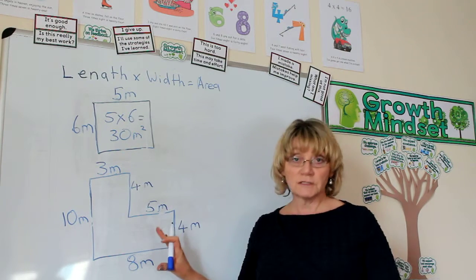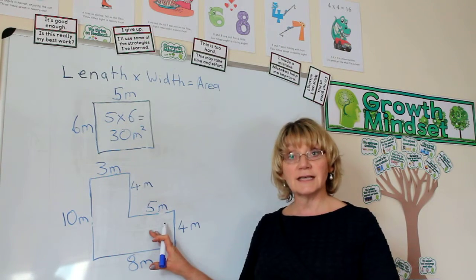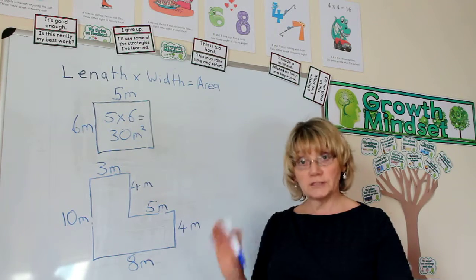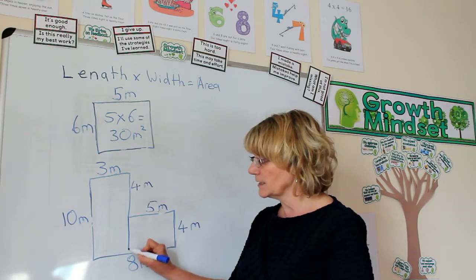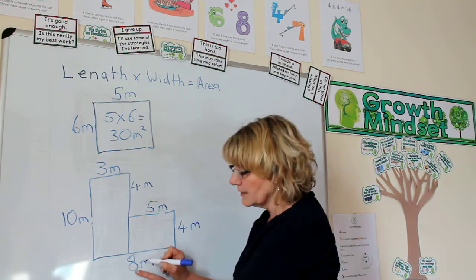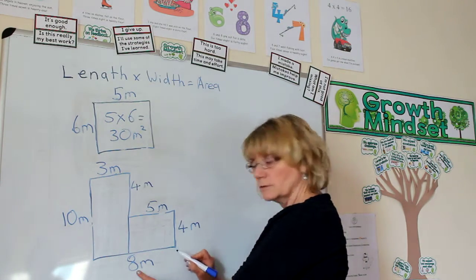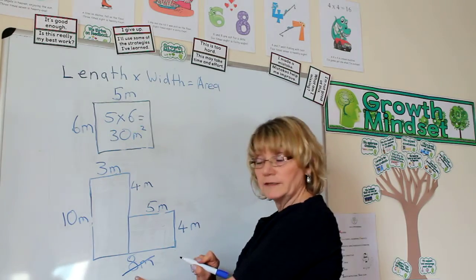Now this one looks much more difficult, but actually it's the same theory. All we do is turn it into two rectangles. I'm going to split it there. And immediately that gets rid of this 8 because the 8 worked across the whole length. So I'm getting rid of it.